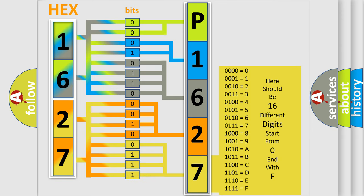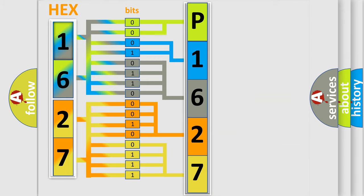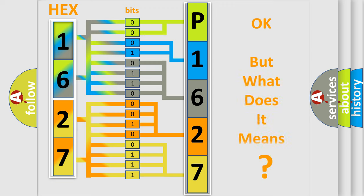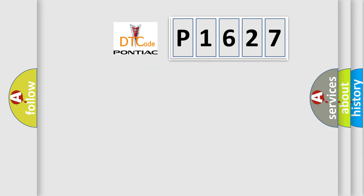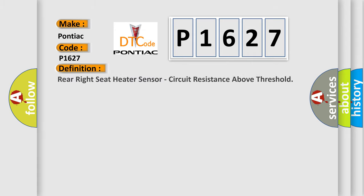A single byte conceals 256 possible combinations. We now know how the diagnostic tool translates received information into a more comprehensible format. The number itself does not make sense if we cannot assign information about what it actually expresses. So, what does the diagnostic trouble code P1627 interpret specifically for Pontiac car manufacturers?